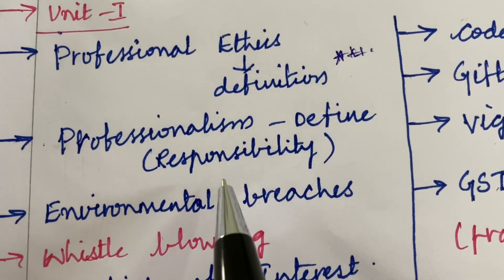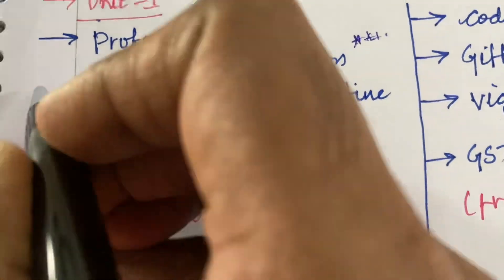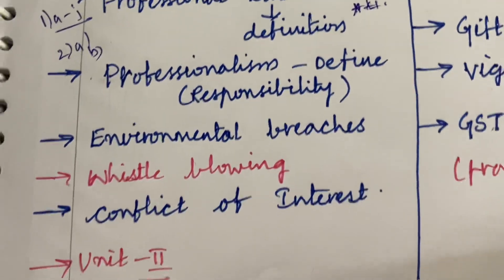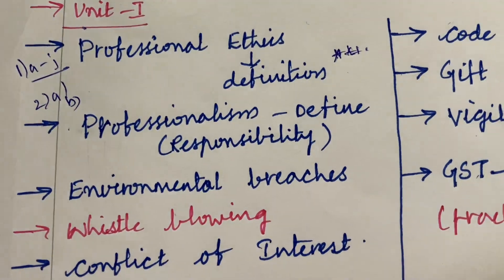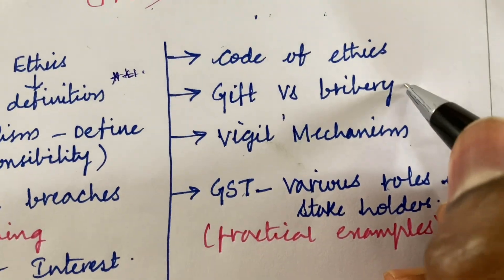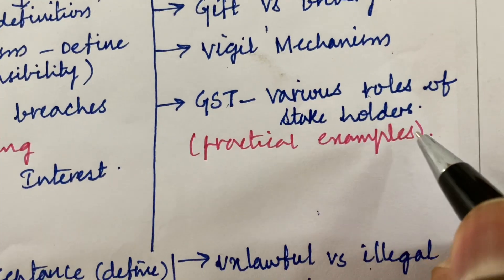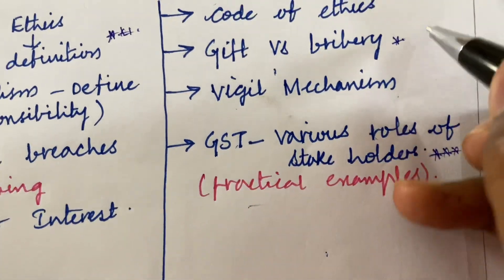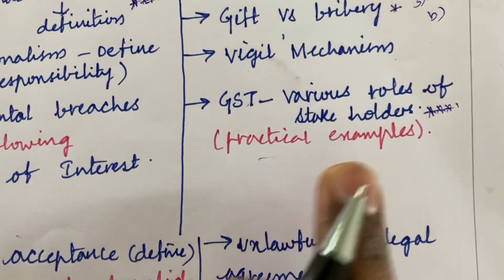Professionalism defined, and the responsibility of professionalism, environmental breaches, whistleblowing, and conflict of interest — these may be 2A or 2B questions. You may also get questions from 1A to 1J from this part. Please work out the long questions so that you can answer the short questions too. The code of ethics, gifts versus bribery, whistle mechanism, and GST various roles of stakeholders may also be asked. A practical example may be required. Do not forget to work out the GST various roles of a stakeholder.